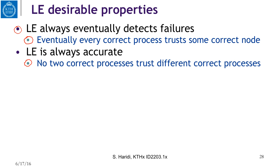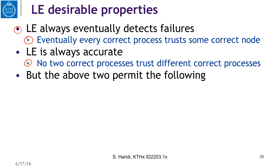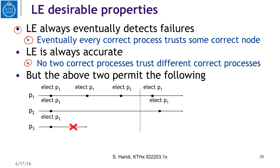Given these two properties, let us look at the following execution, where each process has its own timeline — these are traces. Initially, P1, P2, and P3 elect P3 as a leader.